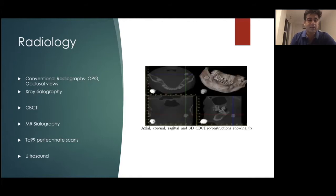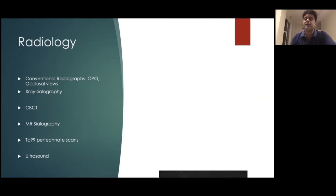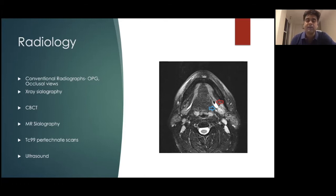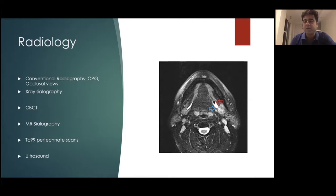CBCT — the cone beam CT — is an excellent tool, but it is really only helpful if you're dealing with a stone; it's not very helpful for other causes of salivary gland ductal obstruction. MR sialography is the investigation of choice when dealing with conditions like strictures, stenosis, and glandular problems. It is also an excellent tool for sialolithiasis, with a sensitivity of almost 99%, though it is costly and should generally be reserved for problematic cases.